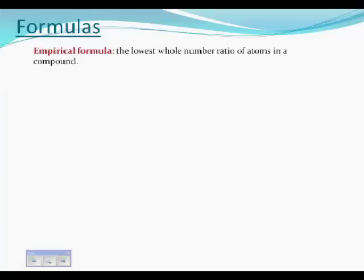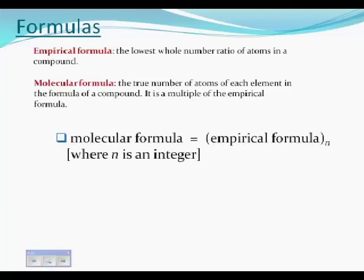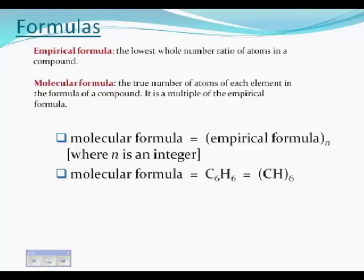Formulas. Formulas come in two types. We have the empirical formula. That is defined as the lowest whole number ratio of atoms in a compound. That might be different from the molecular formula, which is the true number of atoms of each element in the formula of a compound. It would be a multiple of the empirical formula, but remember that times one is technically a multiple. The molecular formula is the empirical formula to some integer n, and the example would be benzene, C6H6, which is really CH taken six times, so we would say the empirical formula is CH.